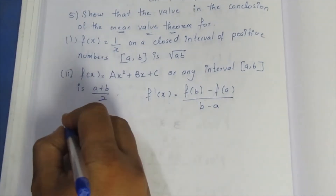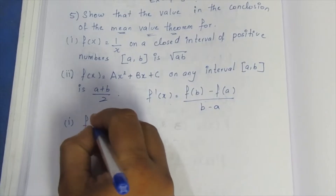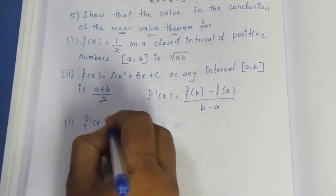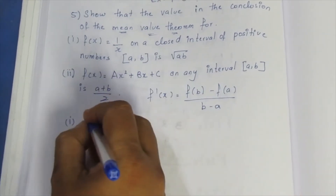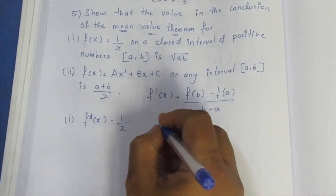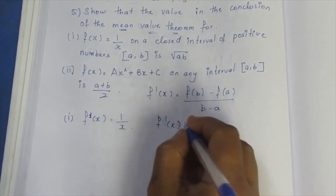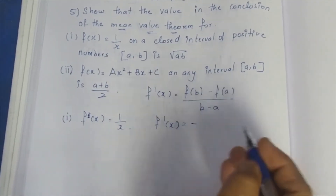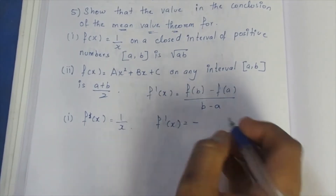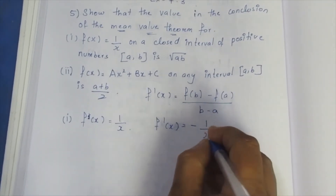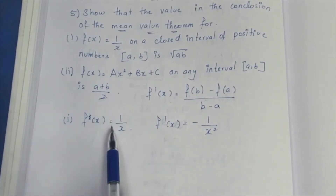First we will find f'(x) by differentiating. f(x) = 1/x, so differentiating gives f'(x) = -1/x². This is because 1/x = x⁻¹, and bringing the power down gives -1·x⁻² = -1/x².